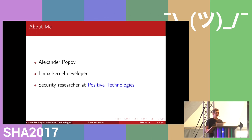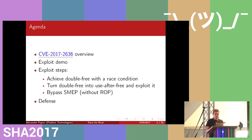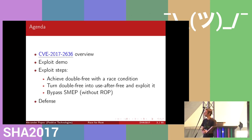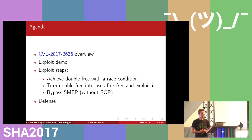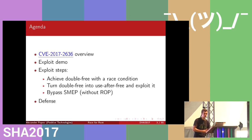I'm a Linux kernel developer and security researcher at Positive Technologies. The plan of the talk: first I will tell you about the vulnerability I found, show an exploit demo video, then describe the exploit step by step — how to hit the race condition and get a double free, how to turn double free into use-after-free, and finally how to bypass SMEP (Supervisor Mode Execution Prevention) without return-oriented programming, and about the defense.